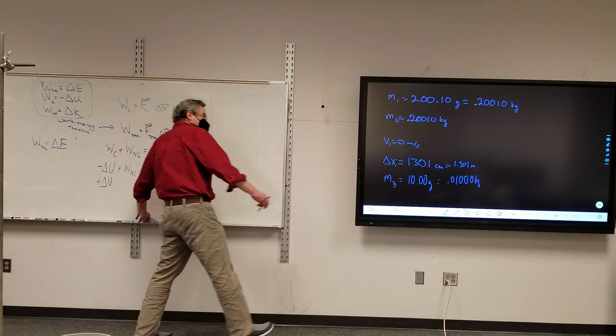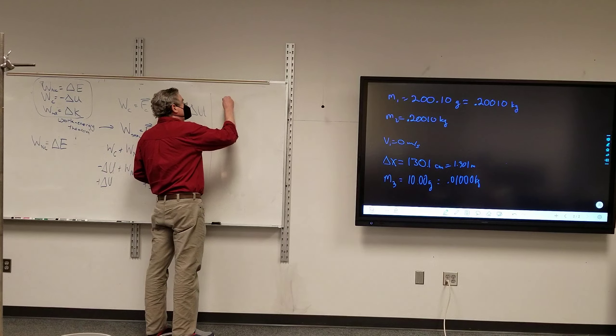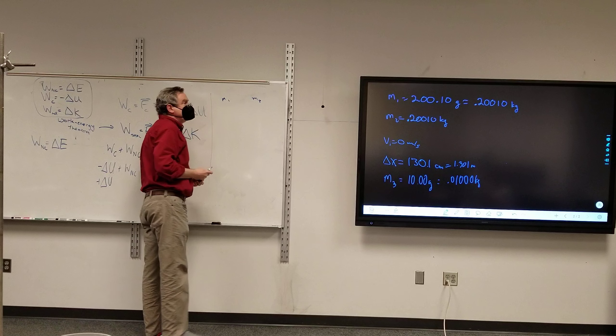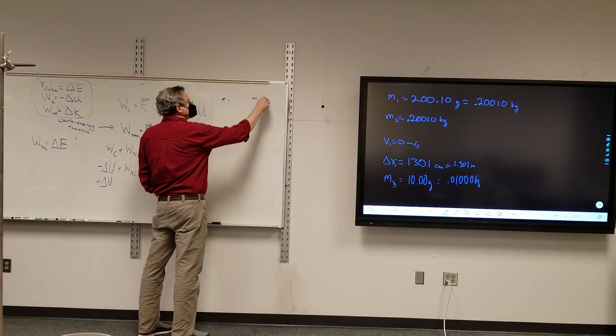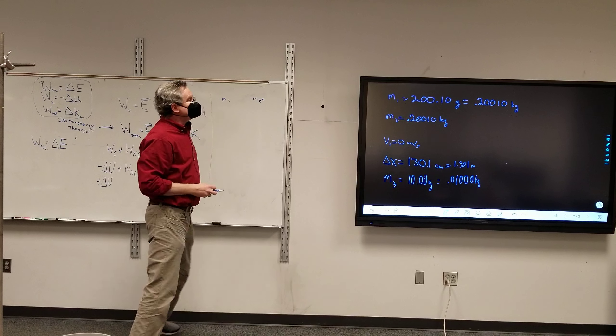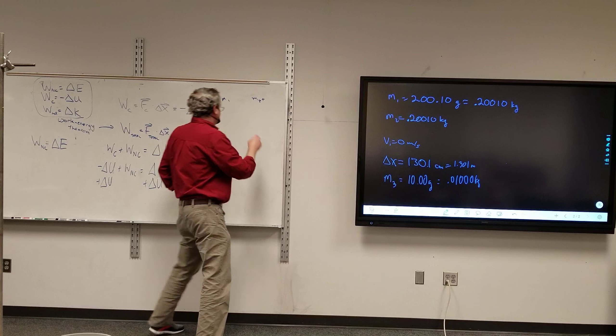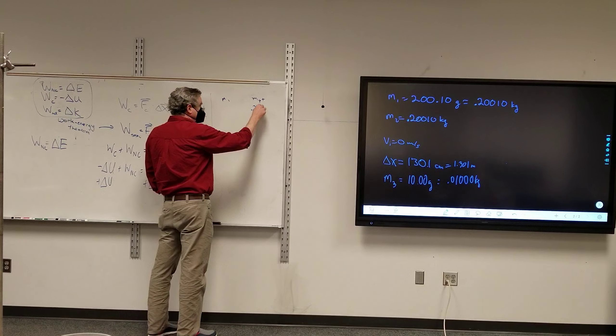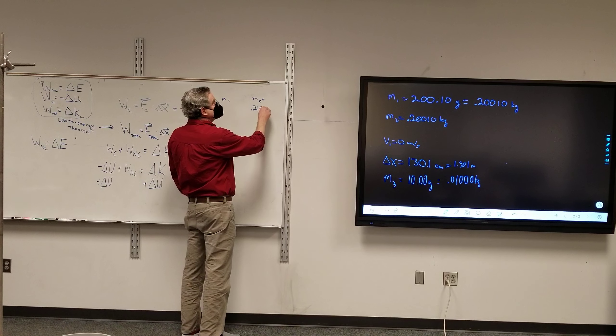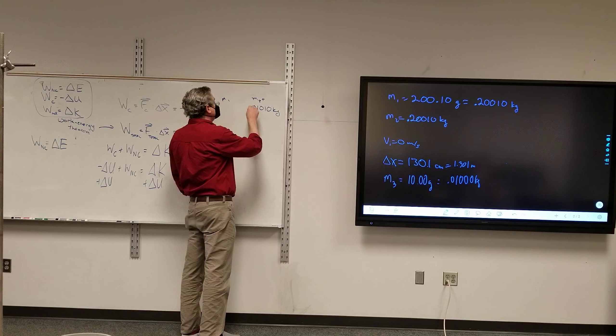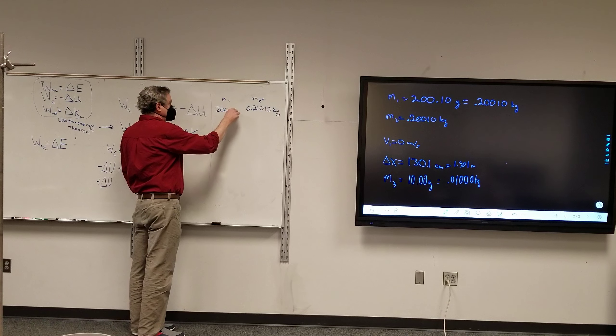So I'm going to add the two masses here, m1 and m2. I'm going to add it to m2. So this is going to end up being the sum of these two masses. This will be 0.21010 kilograms, and this will be 0.20010 kilograms.